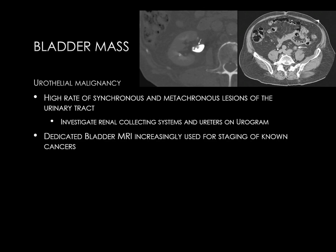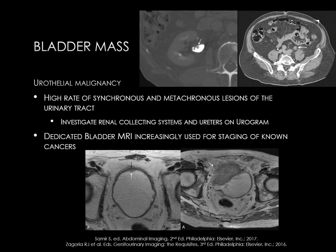A dedicated bladder MRI protocol is increasingly used for staging of known bladder cancers. At the lower aspect of the slide, on the left, we see a small bladder cancer at the anterior aspect of the bladder, indicated by the white arrow. The muscularis layer of the bladder, or the detrusor muscle, is intact, indicated by the black arrow, and this is a T1 stage tumor. Conversely, in the right lower image, there is a large bladder mass which is growing through the muscularis layer into the perivesicular fat — this would be a T3 stage tumor.